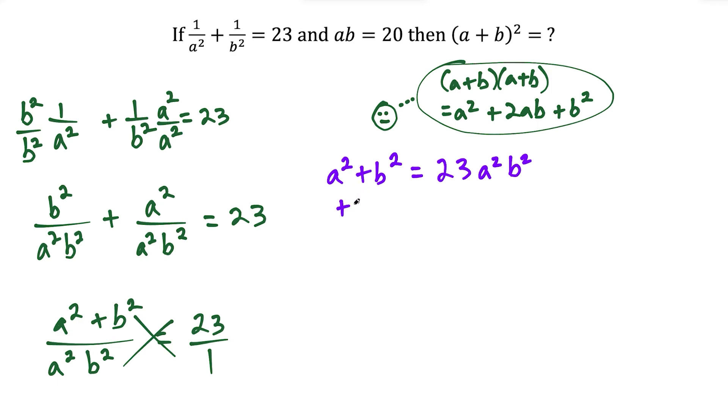That has to be there. So I'm going to add that to both sides, plus 2ab on both sides. And now we would have a squared plus 2ab plus b squared equals 23 a squared b squared, and then we have plus 2ab.